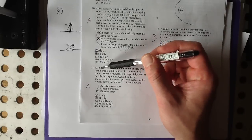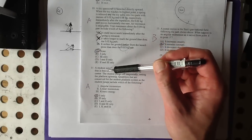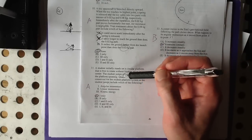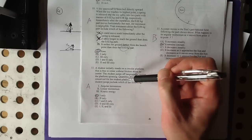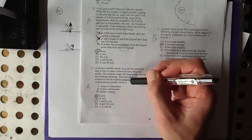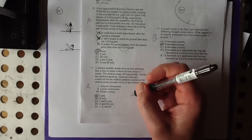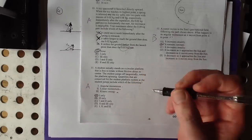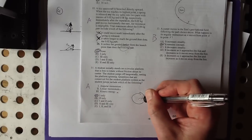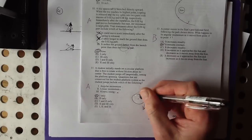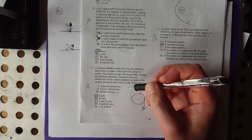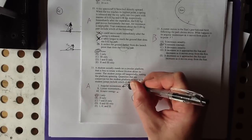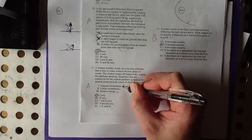Let's see, how about this? A student initially stands on a circular platform that is free to rotate without friction about its center. The student jumps off tangentially, setting the platform spinning. Quantities that are conserved for the student platform system as the student jumps include which of the following. Let's see. We know that all three of these things can be conserved in different situations. Now this is a student jumping off, and that will send the platform rotating in the other direction. We know if we were going to actually solve a problem like this, we would use conservation of angular momentum to do it. Angular momentum is always conserved.